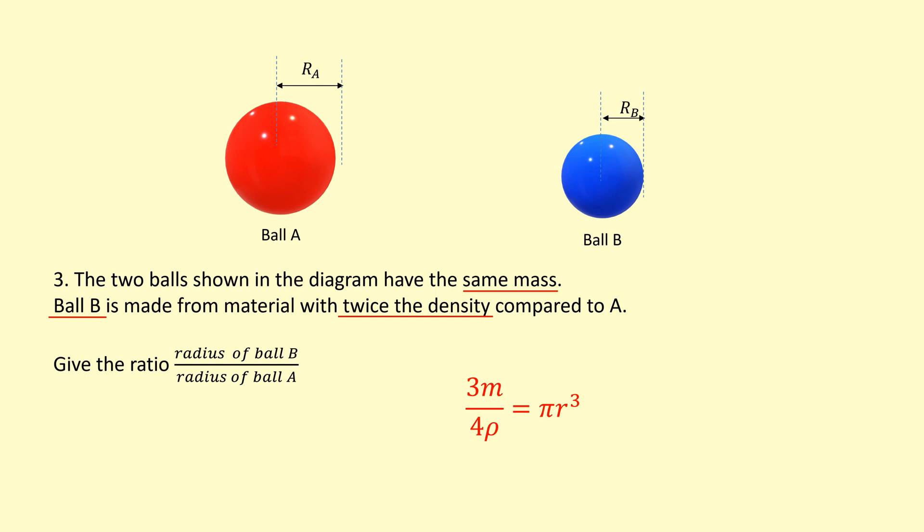So I'm going to bring the density down, bring the 3 up and the 4 down, bring the pi down to the other side there, and then cube root both sides. So now I can figure out what's going to happen when I change the density.